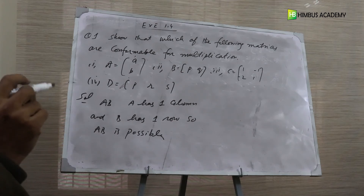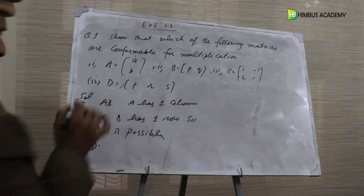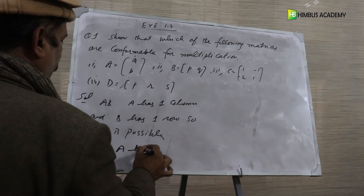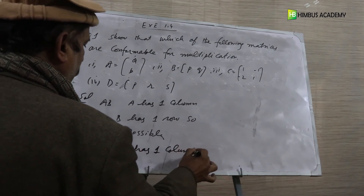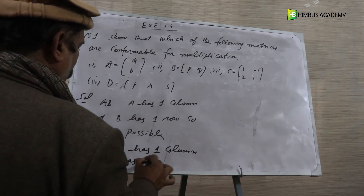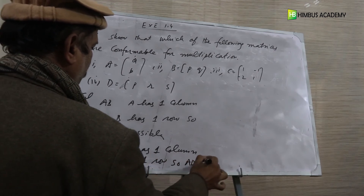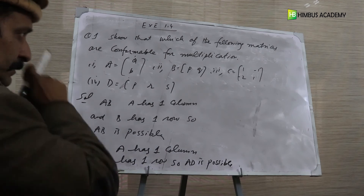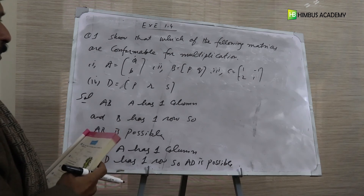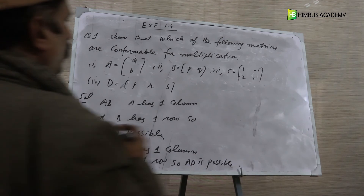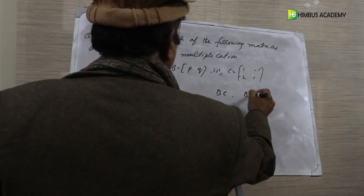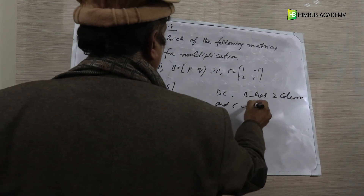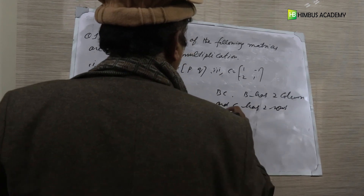A has one column and D has one row, so AD is possible. Also, B has two columns and C has two rows, so BC is possible.